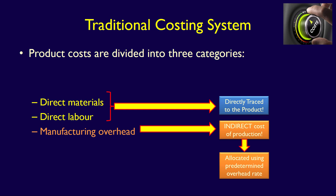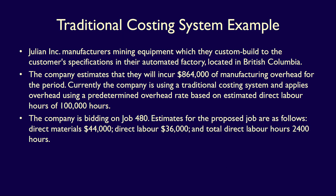There are benefits and drawbacks of every costing system. We already demonstrated the traditional costing system in our series on job order costing, but let's do an additional example just to refresh our memory. We'll demonstrate the traditional costing system using an example from Julian Inc., which manufactures mining equipment, custom built to the customer's specification in their automated plant located in British Columbia. The company estimates they will incur $864,000 of manufacturing overhead over the period, and is currently using a traditional costing system, applying overhead using a predetermined overhead rate based on estimated direct labor hours of 100,000 hours.